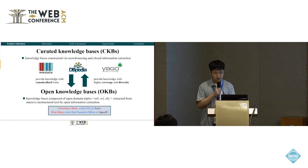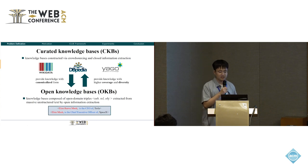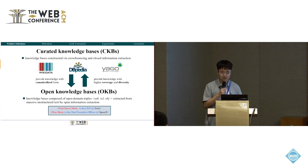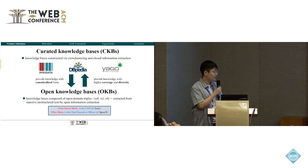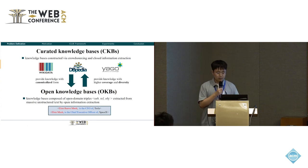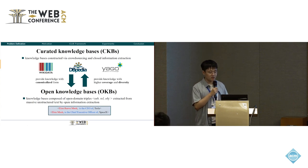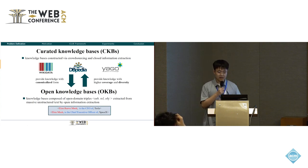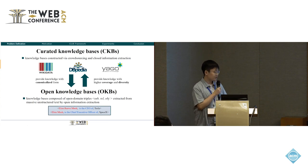For instance, here are two triples in the OKBs. It can be seen that 'Elon Musk' and 'Elon Musk' are two distinct noun phrases referring to the same entity, but it's unaware for the machines, unfortunately, because they do not share the same identifier. So when we query the OKB using the term 'Elon Musk', the first triple would not be returned, which hinders downstream applications. And it's the same for the relation phrases shown in blue.